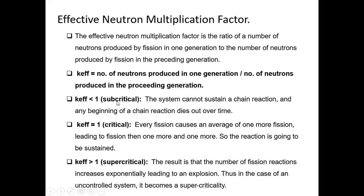A sub-critical system can be converted into a critical system and then made slightly supercritical and controlled. The goal of today's discussion is how to develop a controlled critical system that will keep on producing electricity — a nuclear power plant that can be made sub-critical, critical, or slightly supercritical and then controlled.